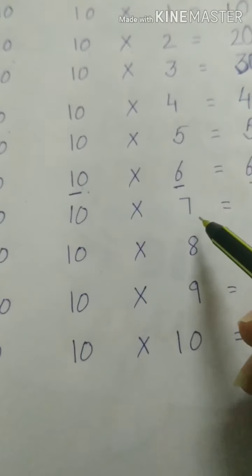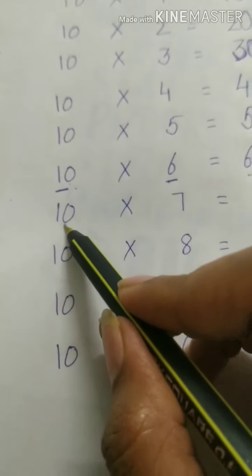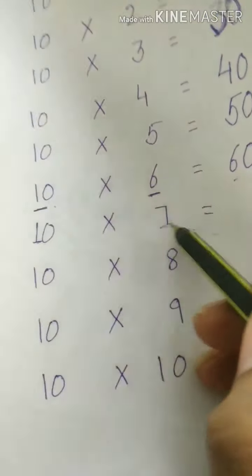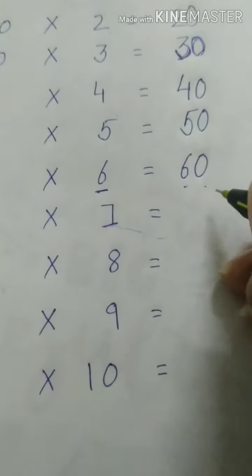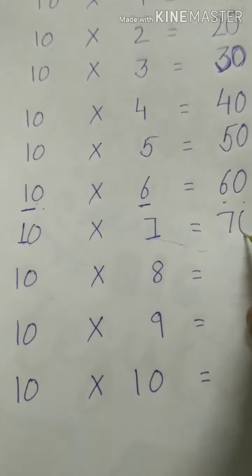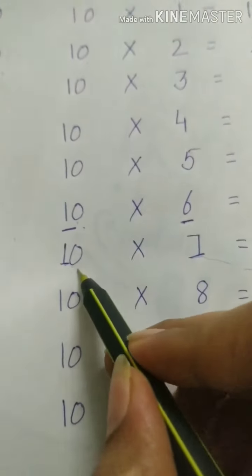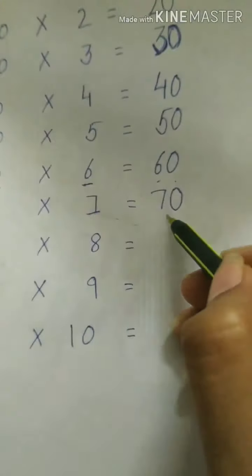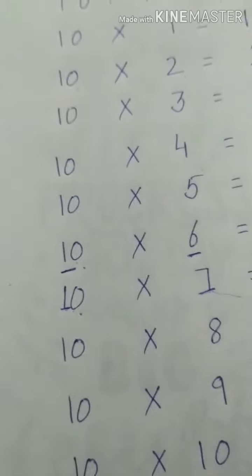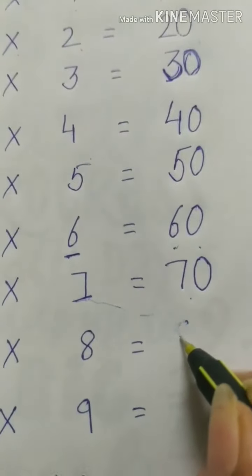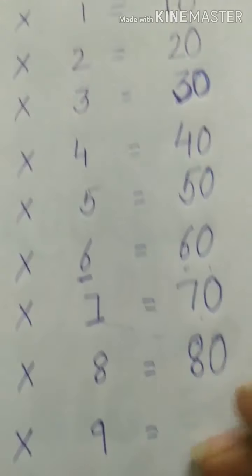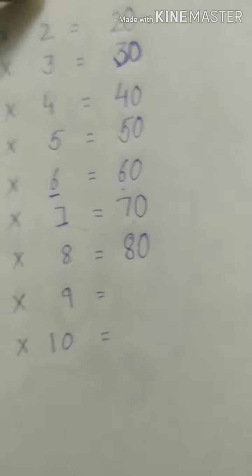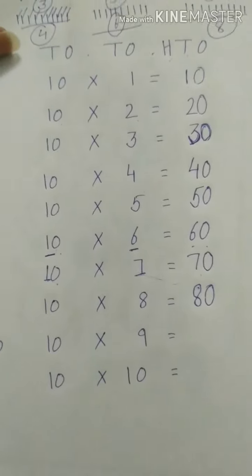Let's do the next one. 7 times 10. We will think in mind 7 ones. What is 7 ones? That is 7. And again we will put 0 for this. So I am getting 70. Now 10 eights. Again we will think 8 ones in our mind. That is 8 and we will add 0 there. That will become 80.